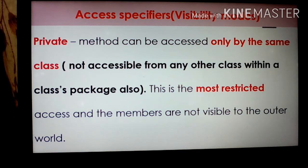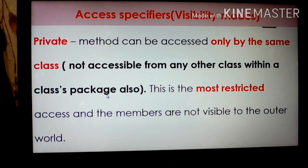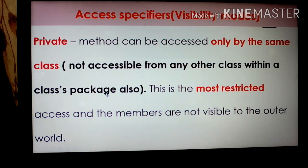The next visibility mod is private. When we use the private access specifier, methods can be accessed only by the same class and are not accessible from any other class, even within the same package. That means we can't access these methods using other classes in the same package. This is the most restricted access and the members are not visible to the outer world.